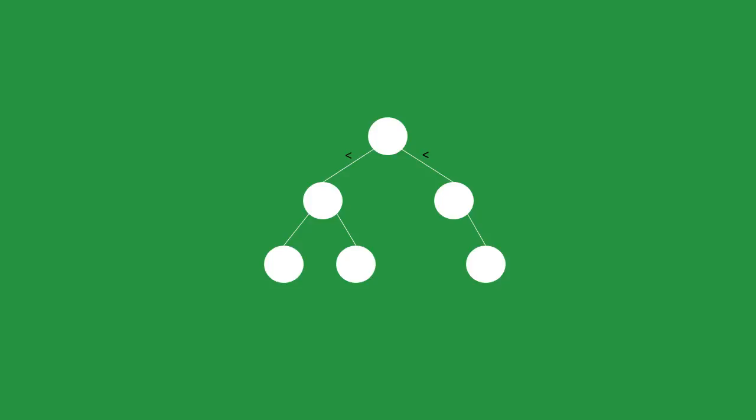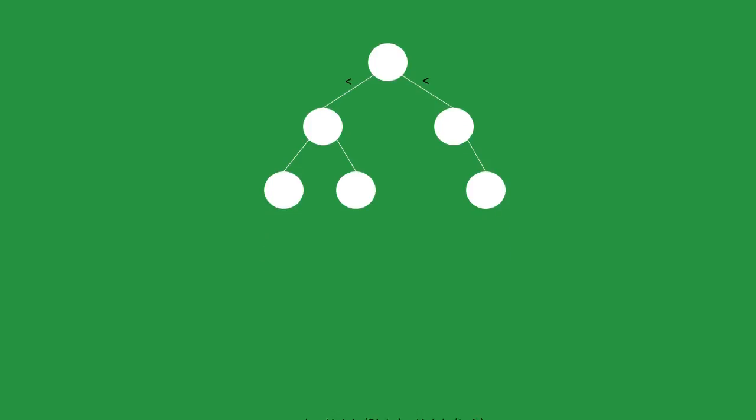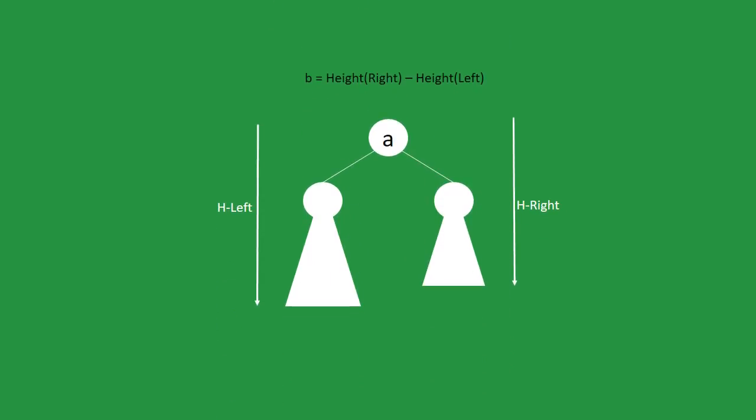But also every node has something called balance, and it's just the difference between height of right subtree and height of left subtree, where height is the number of nodes to the furthest leaf.